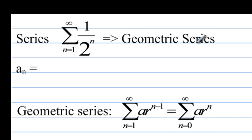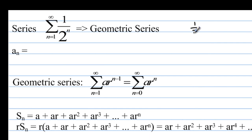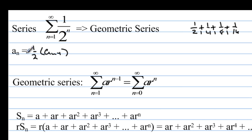This series is a geometric series because to get the next term we multiply by 1/2 every time — the sequence is 1/2, 1/4, 1/8, 1/16. Written recursively: a sub n equals 1/2 times a sub n minus 1. You can write a geometric series two ways: starting at n equals 1, the form is a sub 1 times r to the (n minus 1); or starting at n equals 0, you use a sub 1 times r to the n.